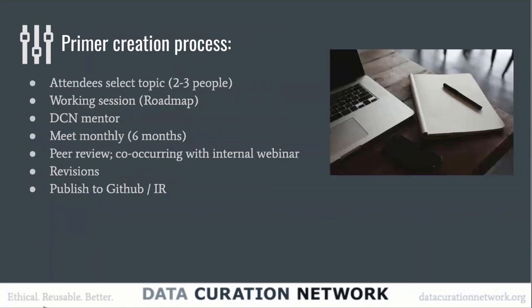This is an overview of the primer curation process. Attendees, typically in groups of two to three, spend time at the actual workshop developing a roadmap for the next six months and an outline of what they hope to accomplish. They're assigned a DCN mentor — somebody within the education initiative who has agreed to facilitate the primer development process. There's also a peer review process to ensure that what's being developed is not just anecdotal thoughts about how something should be curated, but is really reviewed and more fully developed.